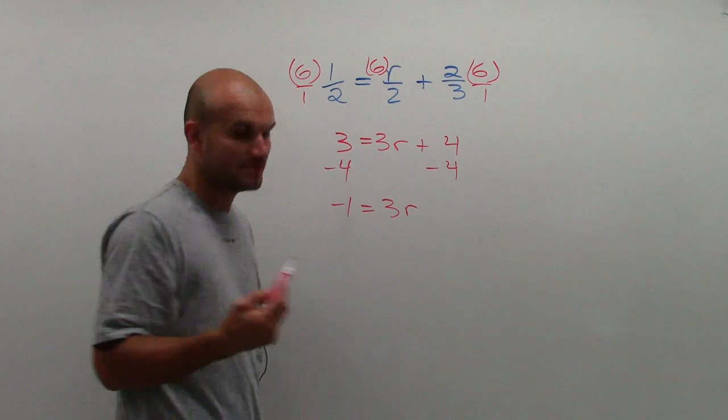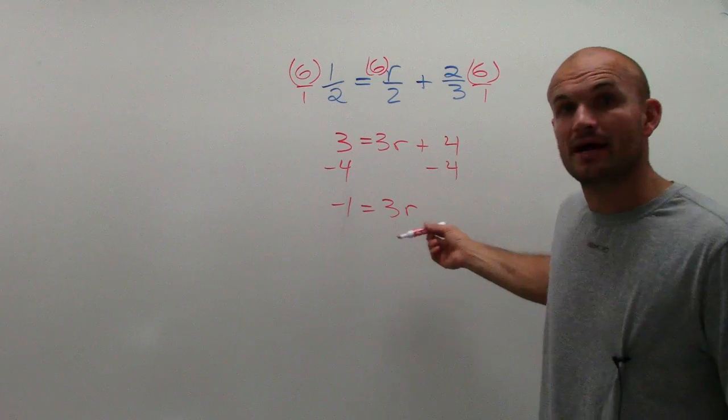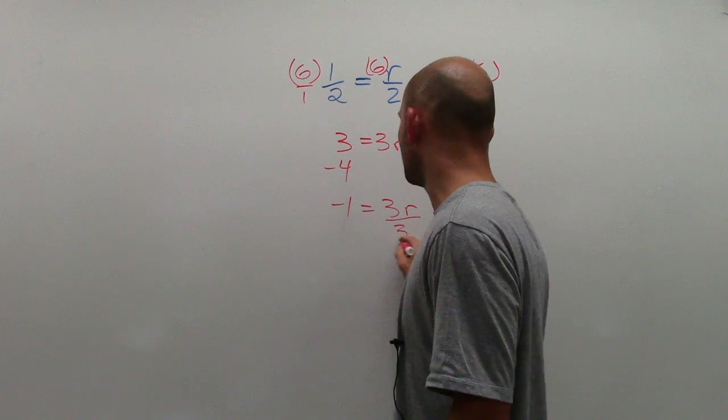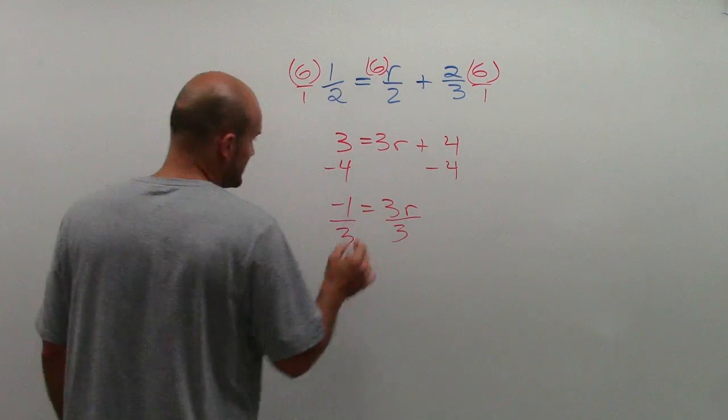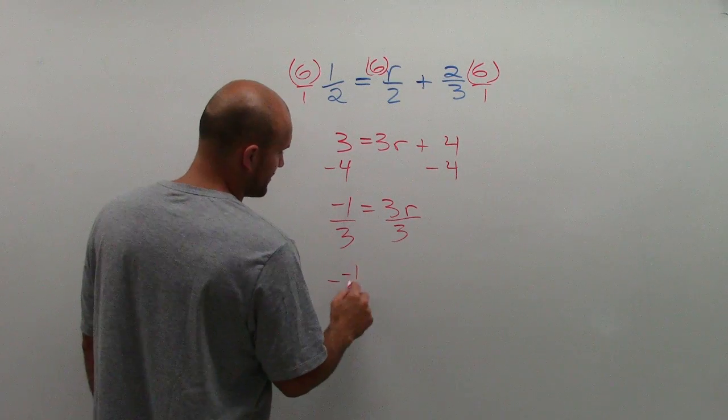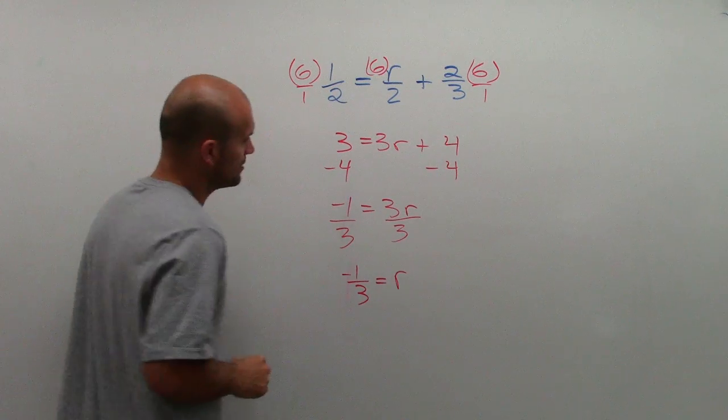Now, I need to look at what's happening to my variable. What is preventing it from being by itself? Well, it's being multiplied by three. So to undo multiplication, I need to divide by three. And what I obtain is negative one divided by three is negative one third equals R.